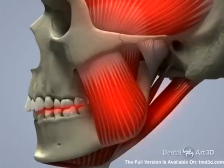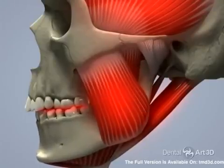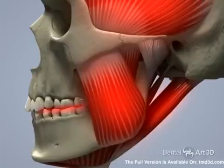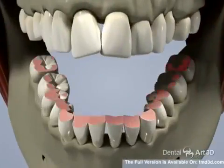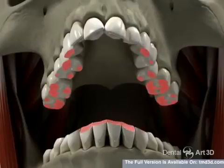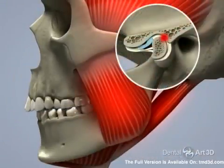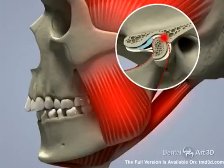Over time, grinding can result in severely worn down teeth. As a result, the teeth become even shorter, the lower jaw shifts distally even further, and the vertical of the bite decreases. In time, joint degeneration occurs. The joint becomes deformed and the ligaments of the joint become damaged.